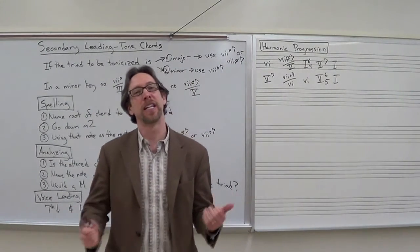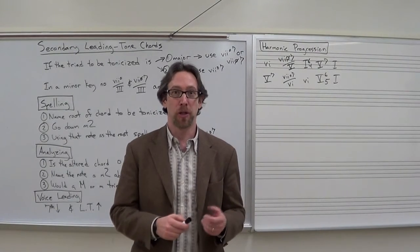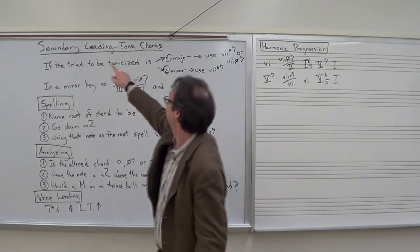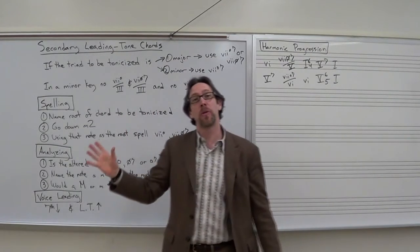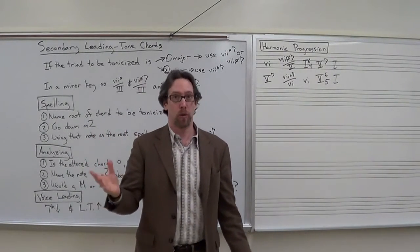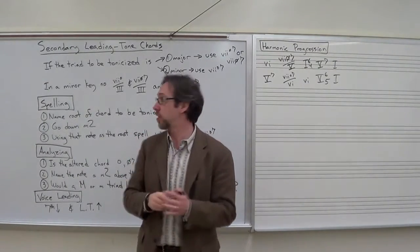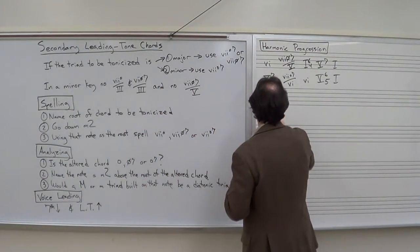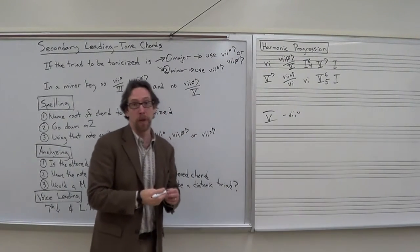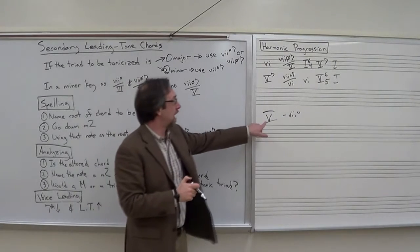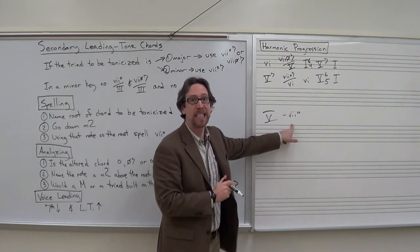We've talked about secondary dominants, but there are other secondary functions. What we're going to talk about right now is secondary leading tone chords. We know that the dominant chord, the 5 chord, is very related to the 7 diminished. So 5 and 7 diminished both have a dominant function. Just like we can have a secondary dominant, we can have a secondary leading tone chord.